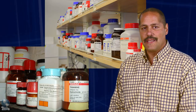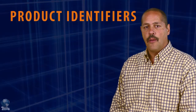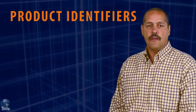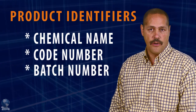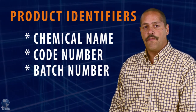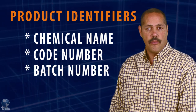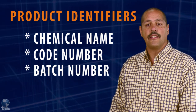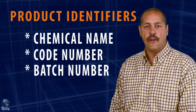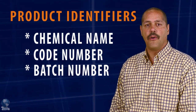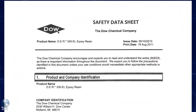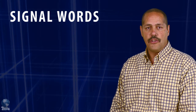Labels will vary but must still contain all the following elements. The Product Identifier can be the chemical name, code number, or batch number. The manufacturer, importer, or distributor can decide the appropriate product identifier, but the same product identifier must appear on both the label and in Section 1 of the SDS.